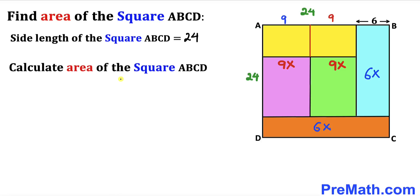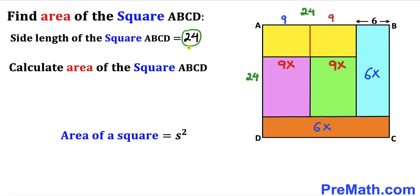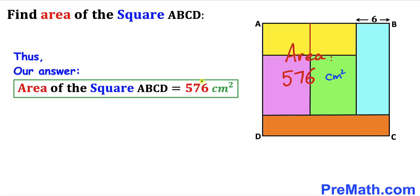Now let's calculate the area of square ABCD. Recalling the area of a square formula — area equals s squared, where s is the side length — and our side length is 24 centimeters. Therefore, the area of square ABCD equals 24² = 576 centimeters squared. Thanks for watching and please subscribe to the channel for more exciting videos.